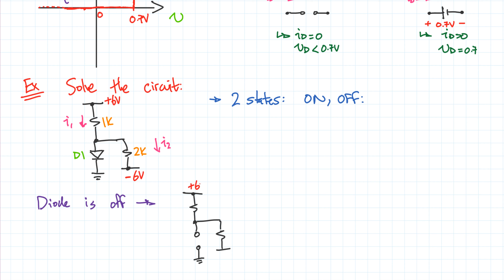With the diode as an open circuit, we have plus 6 volts and minus 6 volts, and the voltage here is VD. We need to check that if this diode is off, the condition VD must be less than 0.7 volts. If VD is less than 0.7 volts, the assumption is valid and we solve I1 and I2 accordingly. If not, we have a problem and must try the other state.